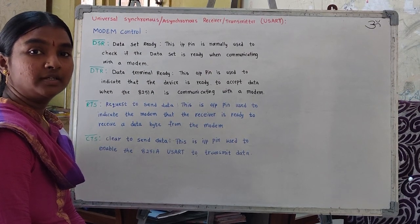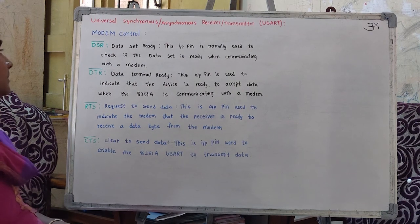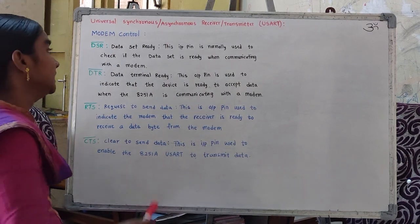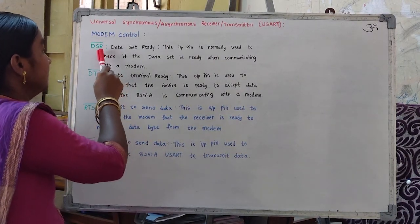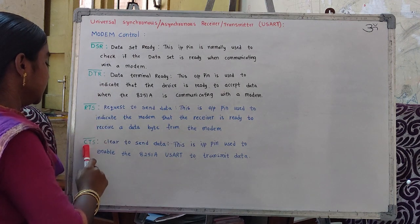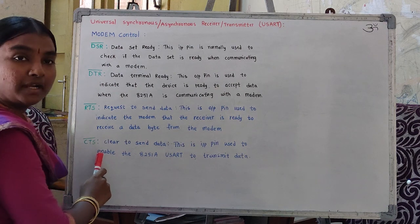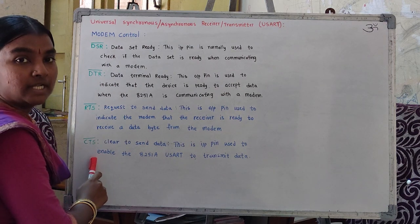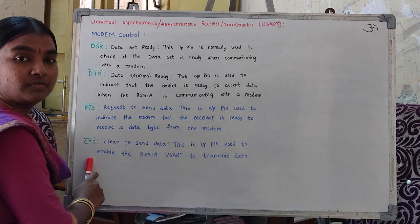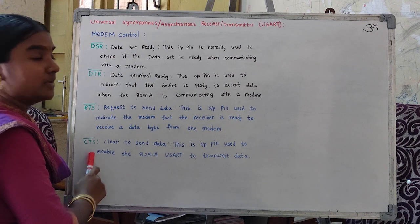The third block is modem control, which consists of four signals: DSR, DTR, RTS, and CTS. All four are active low signals. When logic 0 is received on these pins, they function; otherwise they will not work.